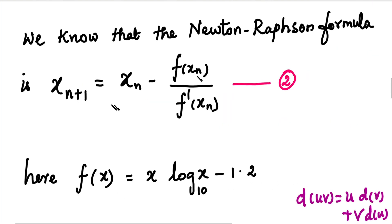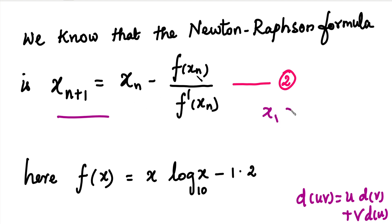In Newton's Raphson formula: xn+1 = xn - f(xn) / f'(xn). This is the general formula. Over each iteration, we choose n values. The first iteration gives x1, then x2, then x3, x4 — this is the general formula. In this formula, we need the derivative value, that is f'(x).